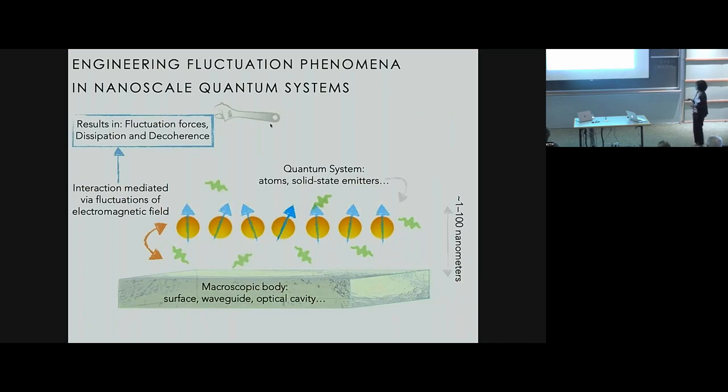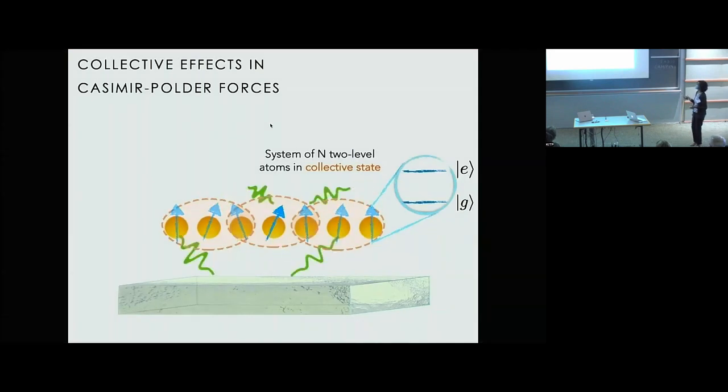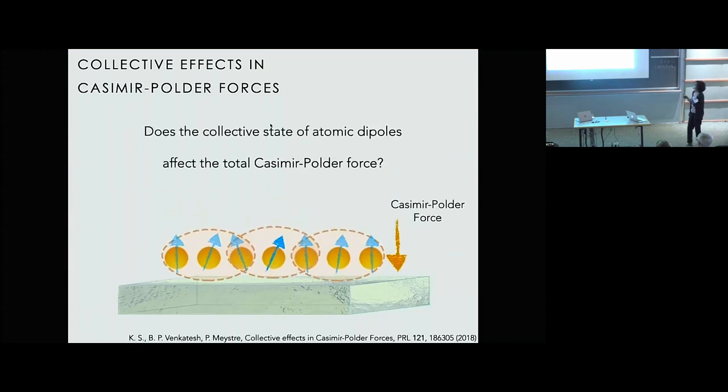And as a specific example of how to do that, I'm going to talk about collective effects in Casimir-Polder forces. So here, for example, if we consider a system of N two-level atoms prepared in a collective quantum state, as these atoms interact with the fluctuations of the field and they experience the Casimir-Polder force, what we can ask is, does the collective nature of these atomic dipoles affect the total force? And the answer, of course, is yes.